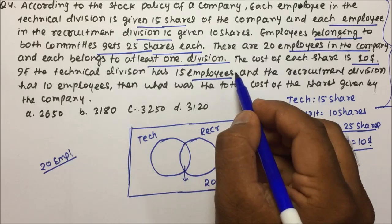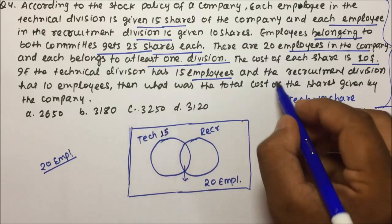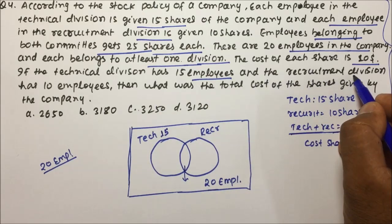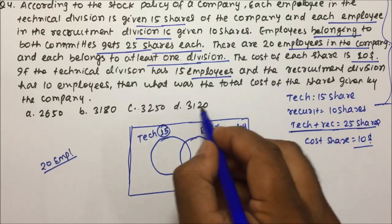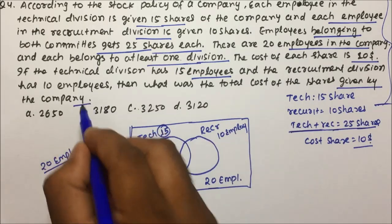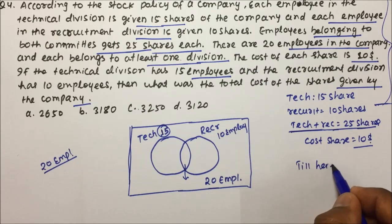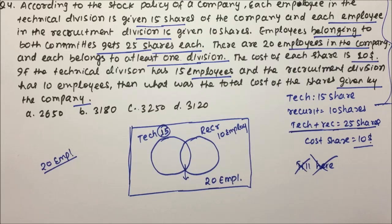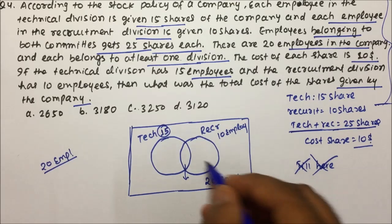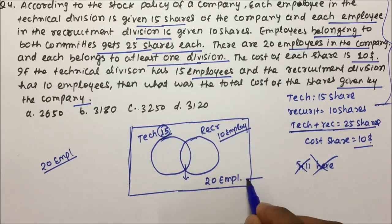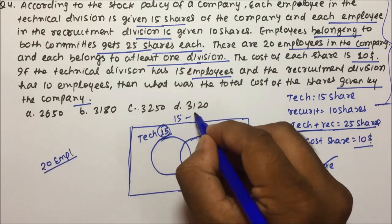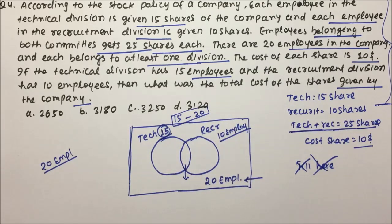The cost of each share is 10 dollars. The technical division has 15 employees and the recruitment division has 10 employees. But the total number of employees is only 20 — so 15+10=25 exceeds 20, which means some employees belong to both divisions. This is a Venn diagram problem.